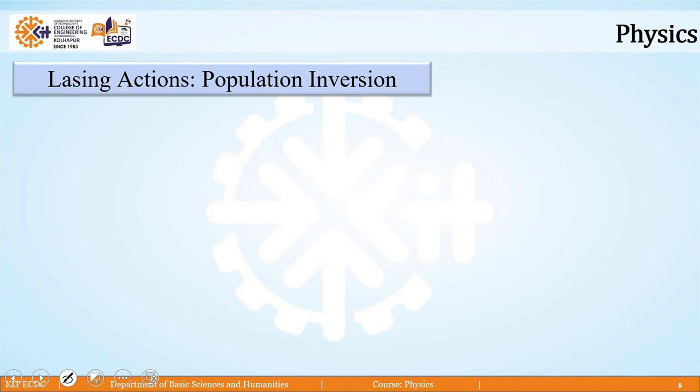First of all, we should understand population inversion. This is again a very important step for the formation of laser. By these two words 'population inversion,' can you judge what it could mean? About whose population are we talking here, and what do we mean by inversion?